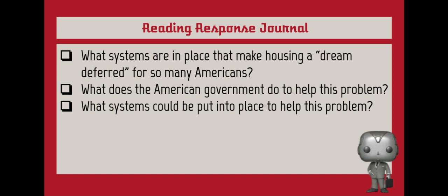As you answer these questions, think about the following: Why is it difficult for the average American to afford a home? Can the government do something about that? Remember to look back through the texts you have read and responded to in your reading response journals. Are there any systems in place to help Americans buy homes?